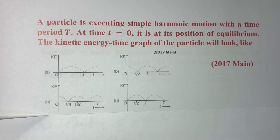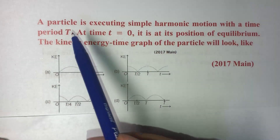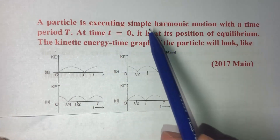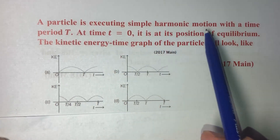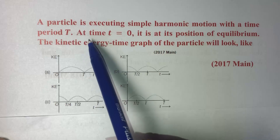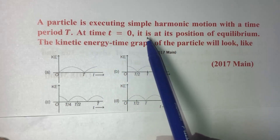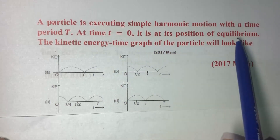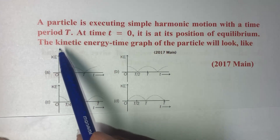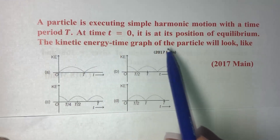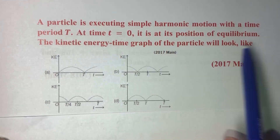Hello friends. In today's question, a particle is executing simple harmonic motion with a time period T. At time t equals zero, it is at its position of equilibrium. The kinetic energy-time graph of the particle will look like — so these are four graphs.